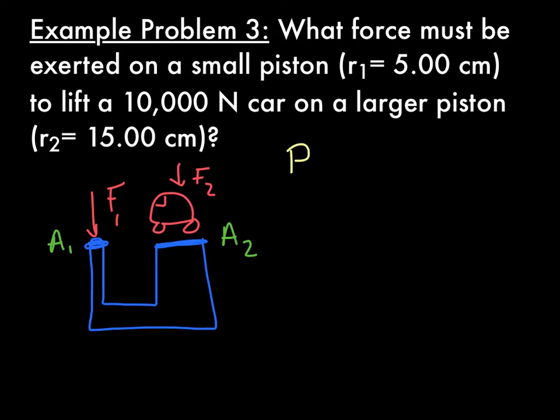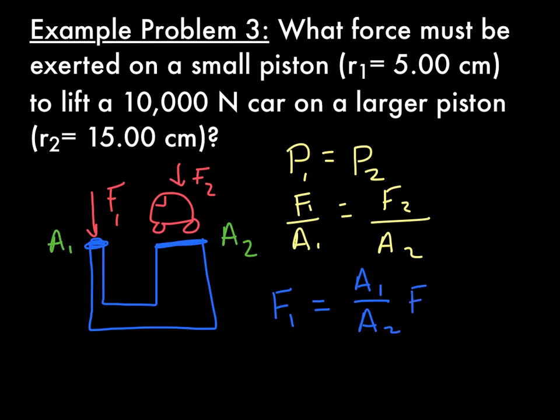that the pressure at any point, at equal heights in the fluid, is the same. Which means the force over area at 1 equals force over area 2 over A2. And if you solve this for F1, like we want, you will get F1 equals A1 over A2, F2.